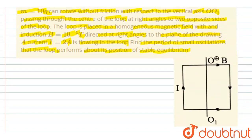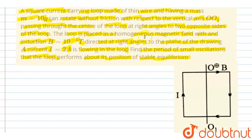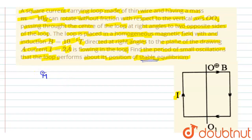We are given a loop placed in a homogeneous magnetic field in which a current of 2 amperes is flowing, and we have to find the time period of small oscillations of the loop performed about its position of stable equilibrium. The condition for stable equilibrium is that the magnetic moment and the magnetic field induction direction must be in the same direction.